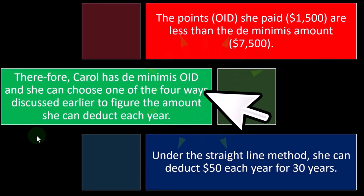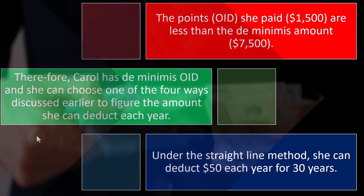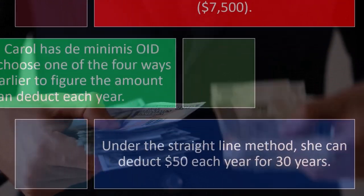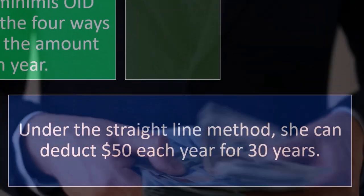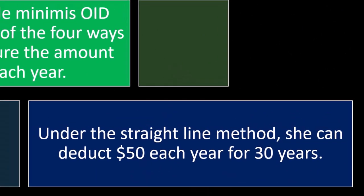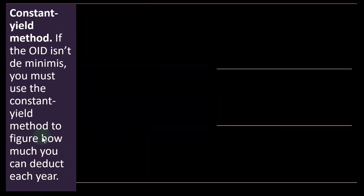Carol chooses the straight-line method because it's the easiest approach. Under the straight-line method, she can deduct $50 each year for 30 years. In practice, that means putting it on the books similar to a depreciation schedule — but not as part of the building itself. Rather, the points are allocated over the life of the loan, which is a straight-line allocation over 30 years.